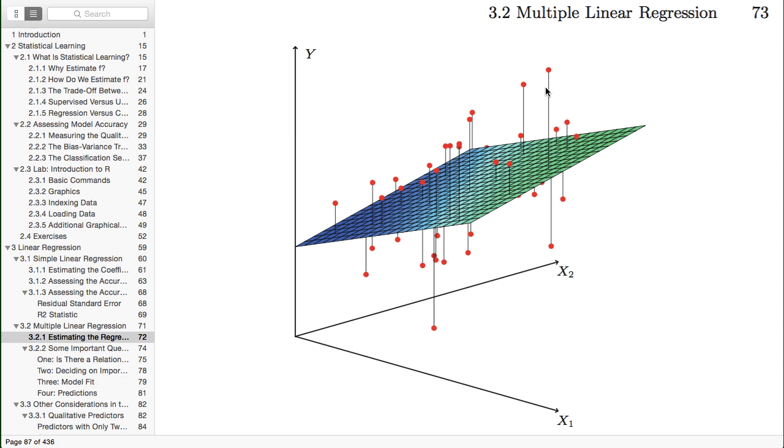These lines emanating from the least squares plane, the sum of their squares is RSS for this model. We seek to minimize RSS, very much like the simple linear regression model, except we're using more predictors.